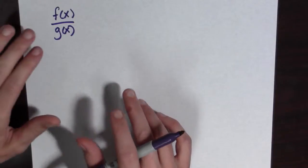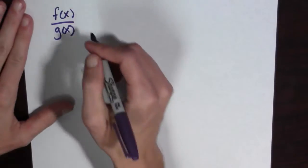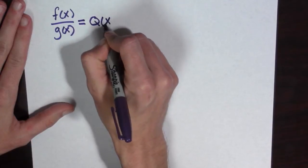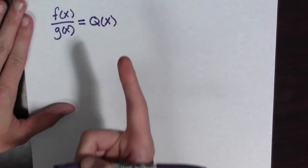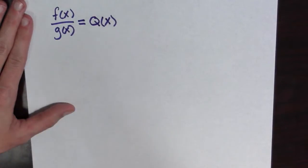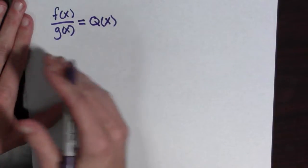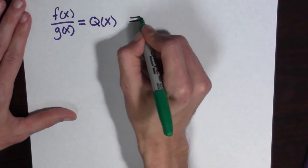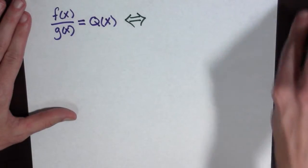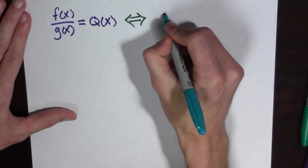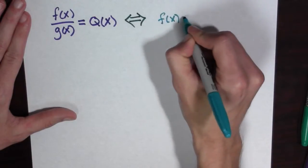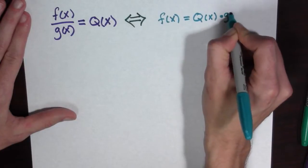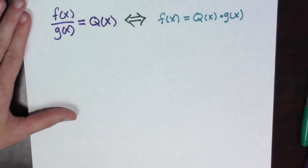The first thing I'm going to do is a little trick. I'm going to say f(x)/g(x) is equal to q of x, where q stands for quotient. And if this is the case, then this statement is equivalent to: f of x is equal to q of x times g of x.